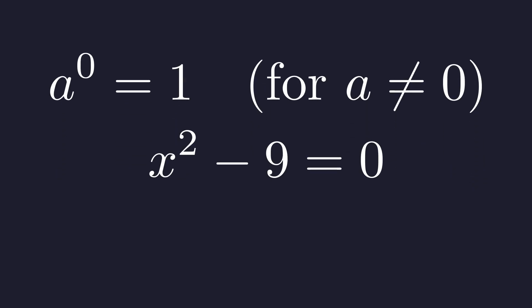So we take our exponent, x squared minus 9, and set it equal to 0. To solve for x, we first need to isolate the x squared term. We add 9 to both sides of the equation.